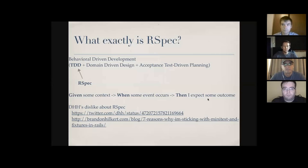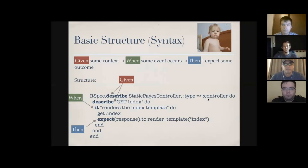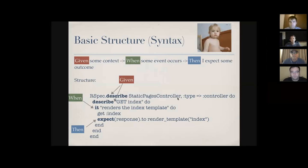This is the structure of RSpec: given some context, when some event occurs, I expect some outcome. The syntax goes like this: `RSpec.describe` — and here's a controller test example — StaticPagesController, type: controller. You describe it, so the first two describes cover what is given, and then it renders an index template, which is when something happens.